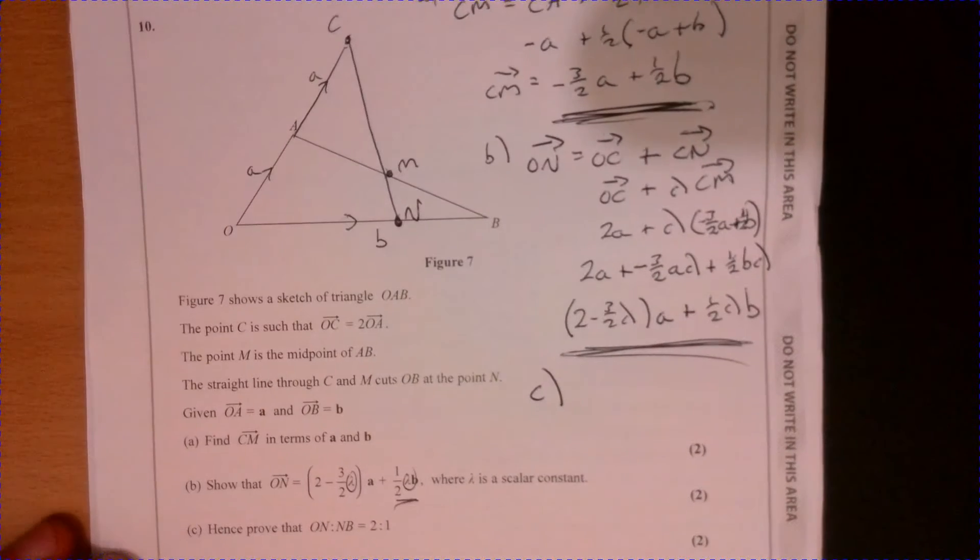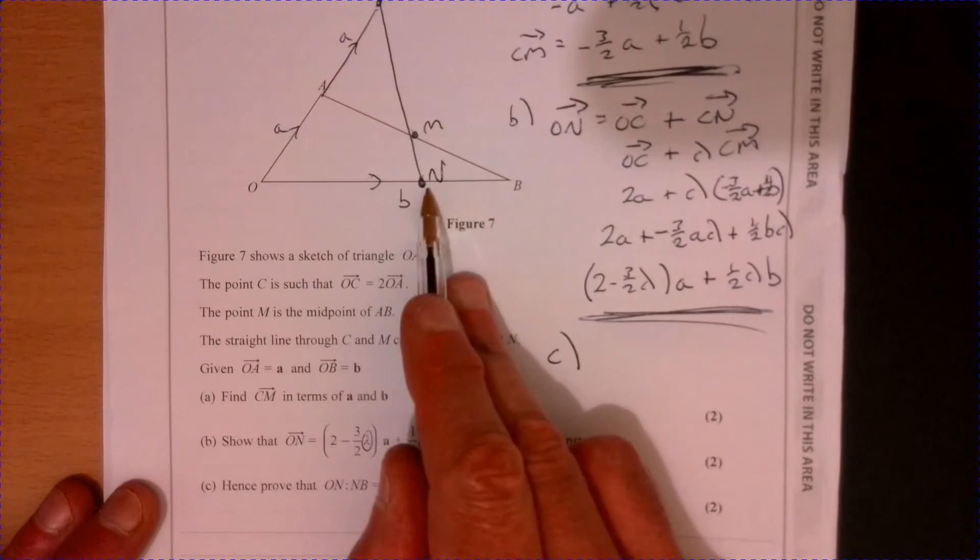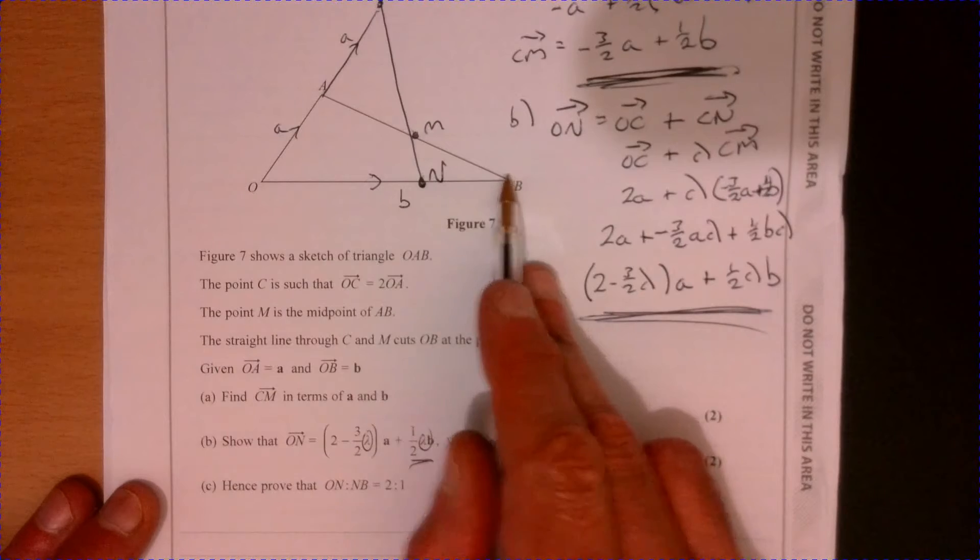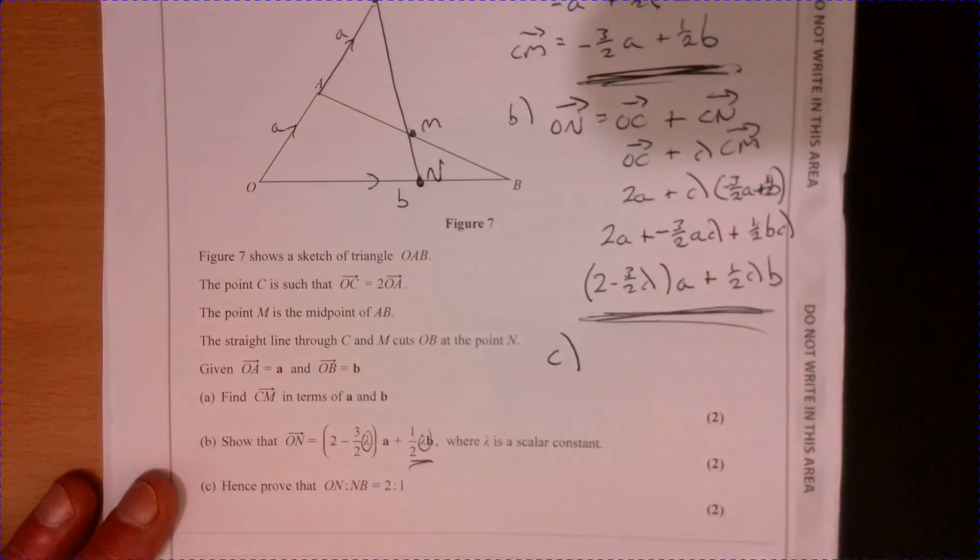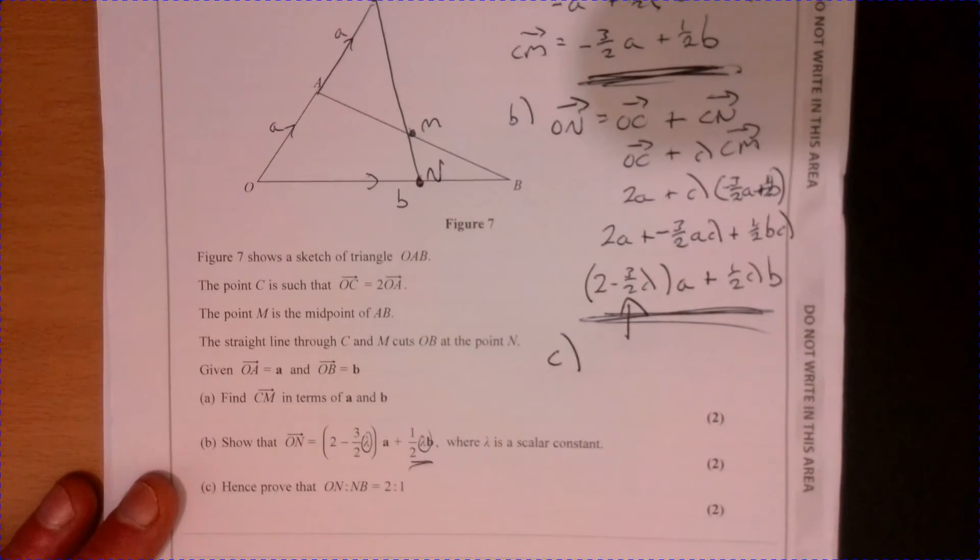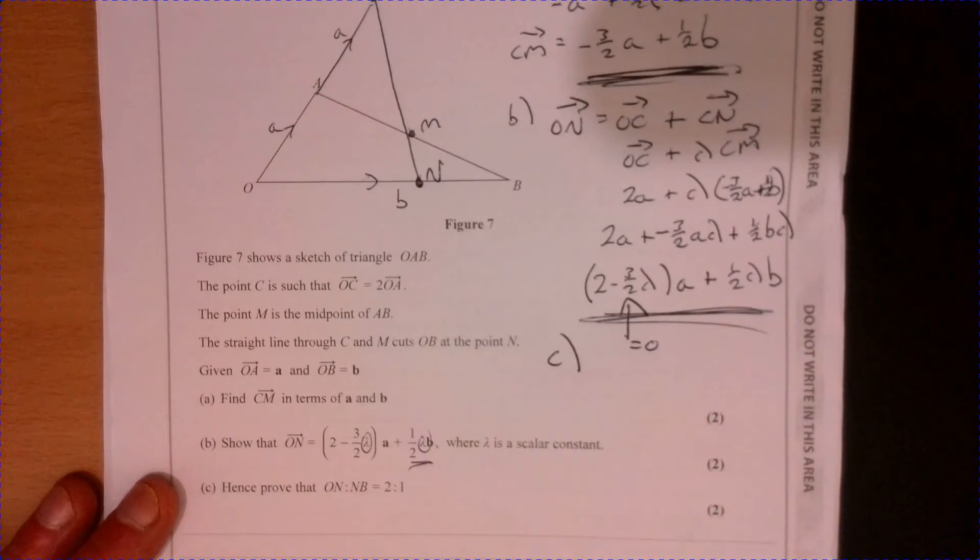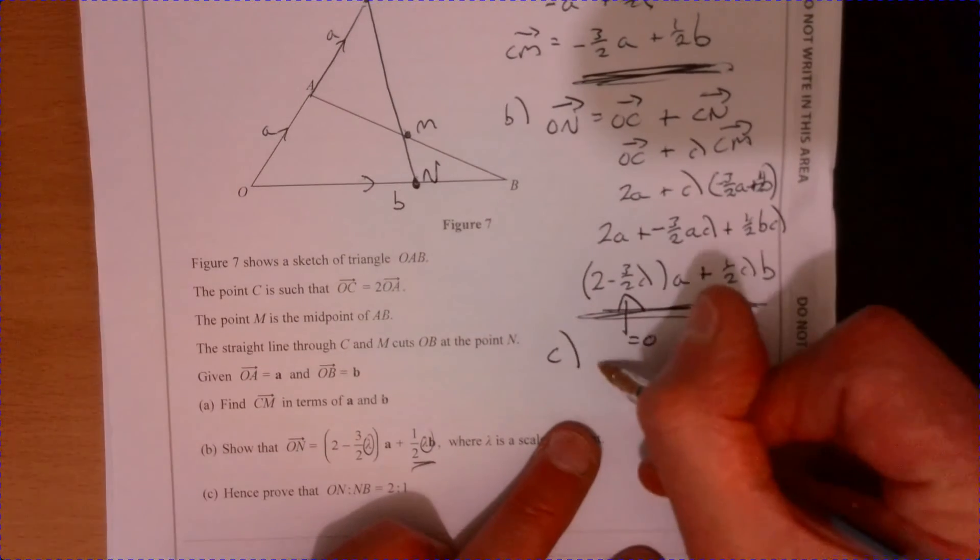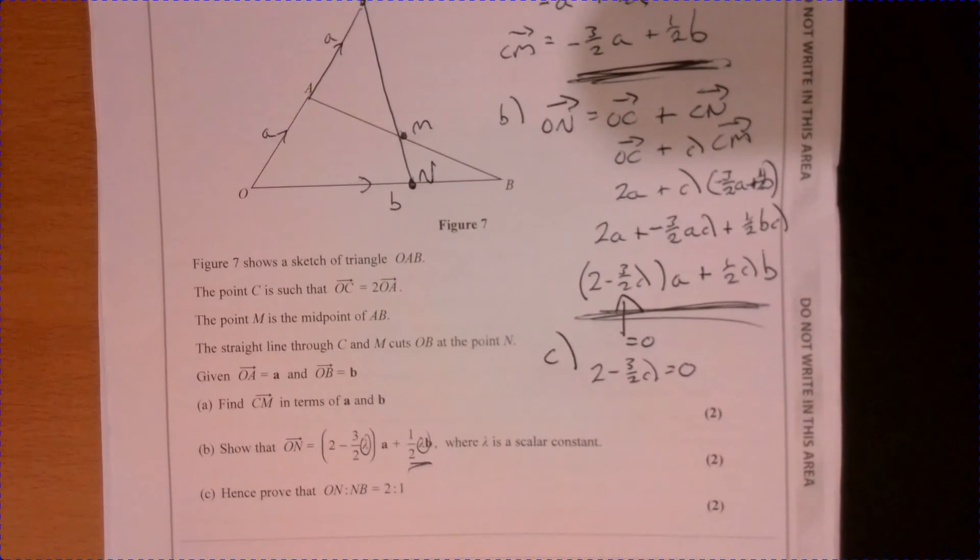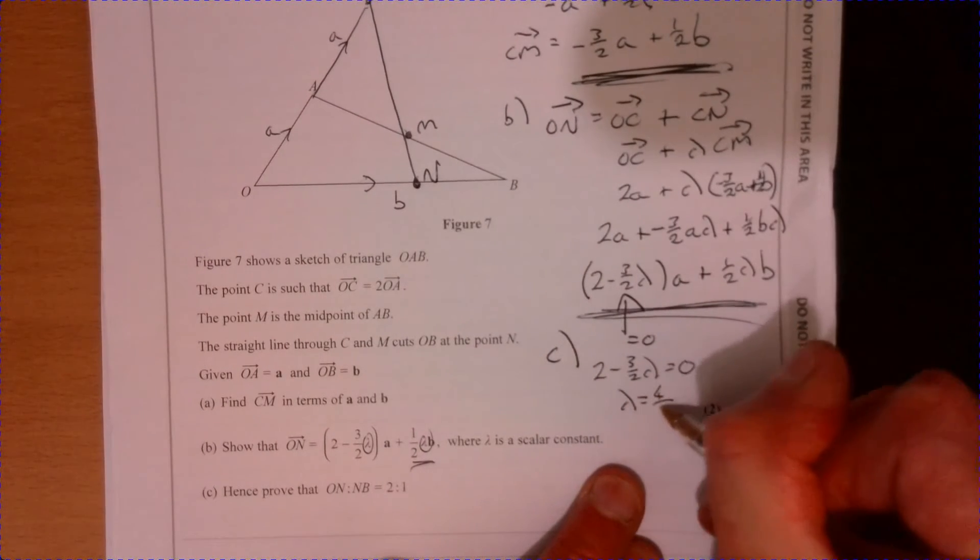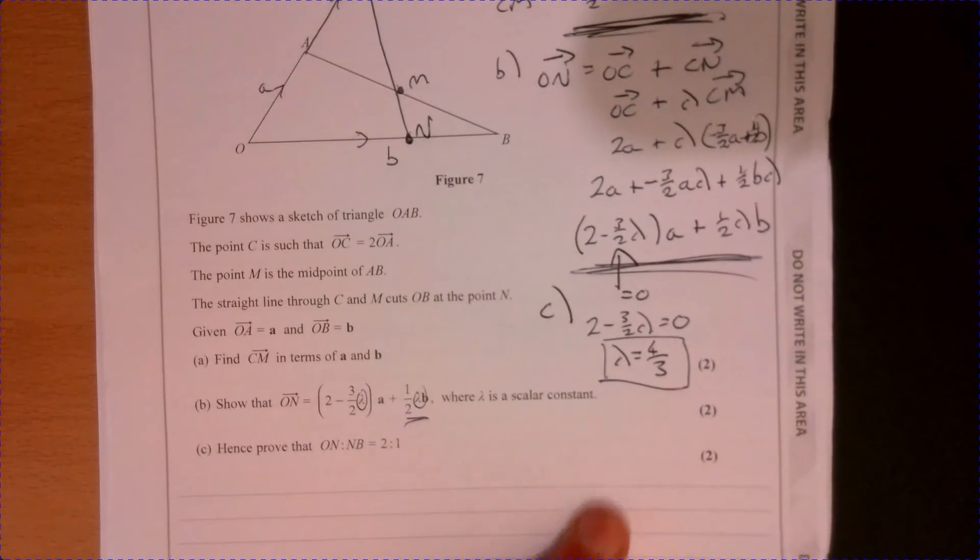Let's have a look at part c. Now the key thing about part c, it's saying ON to NB, so it's talking about this part to this. Well, I know that whatever ON is, it's got to only contain b. So this part here must be equal to zero. That bit has got to be equal to zero because it's not going to contain any a's. That allows us to work out what this scale factor is here.